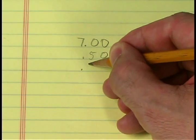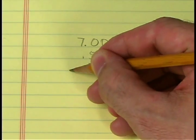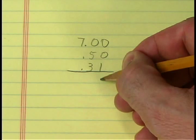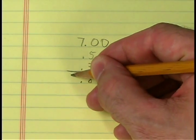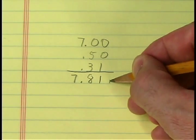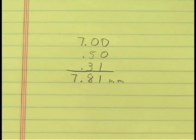With all the information gathered and written down, it is now time to add the pieces together to obtain an accurate measurement. The measurement is read seven millimeters eighty-one hundredths, or seven millimeters eight hundred ten microns.